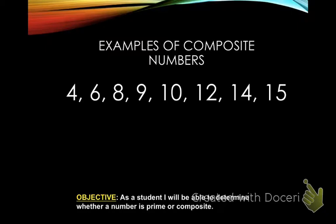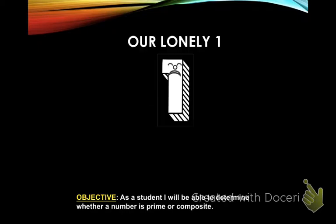Some more examples of composite numbers: four, six, eight, nine, ten, twelve, fourteen, fifteen — they all have more than two factors. For example, four: one times four and two. Six: one times six and three times two. Eight: one times eight and two times four. Nine: one times nine and three. Those are all composite numbers.